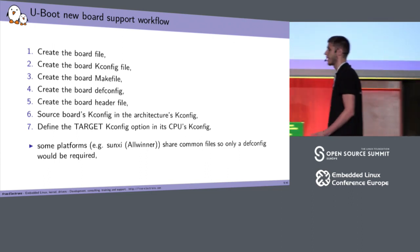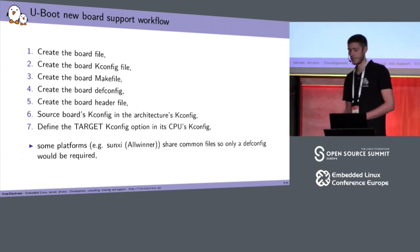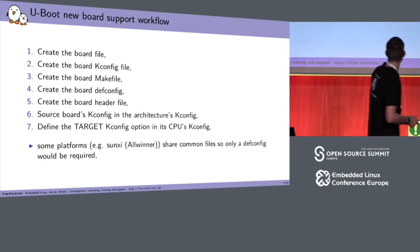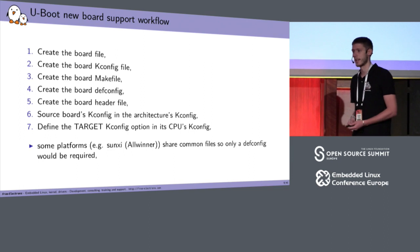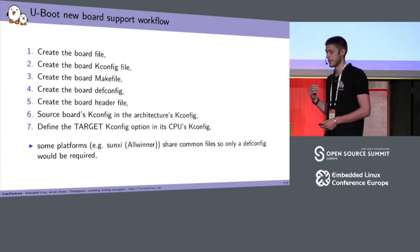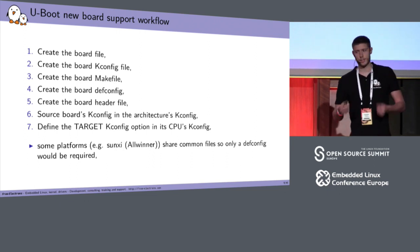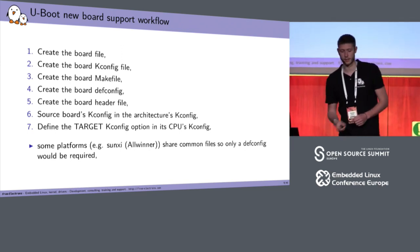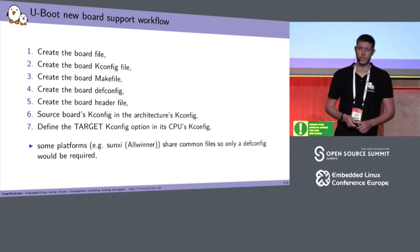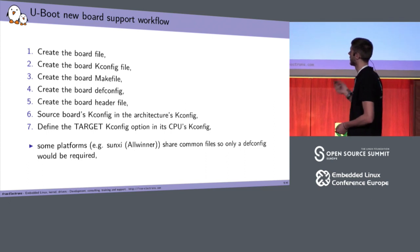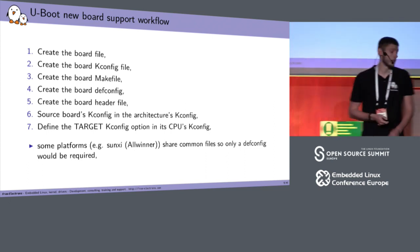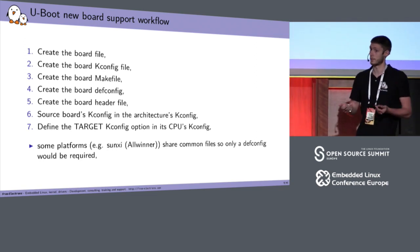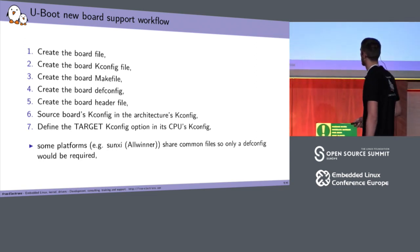You need to have a workflow so you don't get lost, and to repeat the same process each time you want to add support for a new board. First, create the board file — the file where you say what pin mux configuration and init sequence your board needs. Then create the board KConfig file to say where to find the makefile, board header file, and board file. Then create the makefile, the defconfig file, and the header file. Finally, source your board's KConfig in the architecture's KConfig and define the target KConfig option in its CPU. Note: some platforms like Allwinner share common files, so you may only need to create a defconfig.